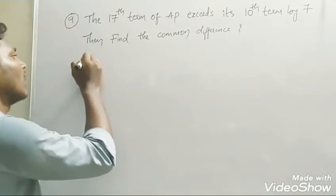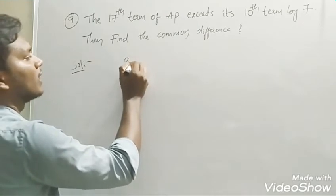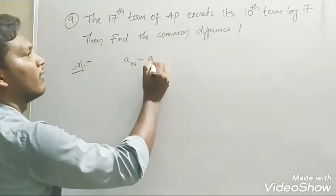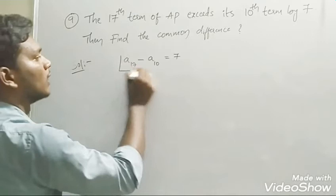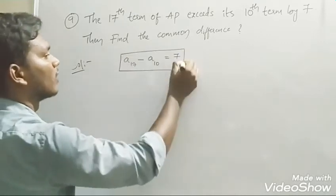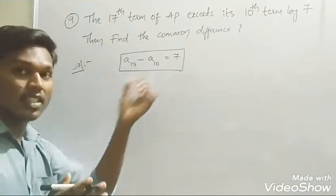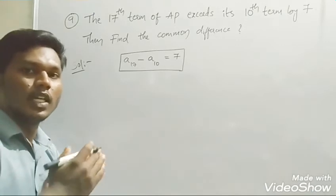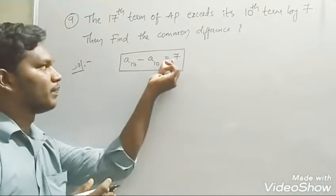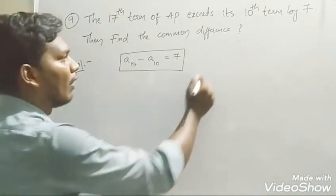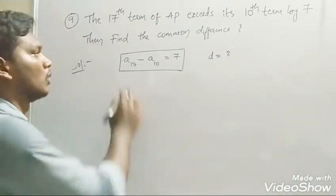So 'exceeds' means the difference between the 17th term and the 10th term is seven. Our target is to find the common difference, so d is equal to question mark.